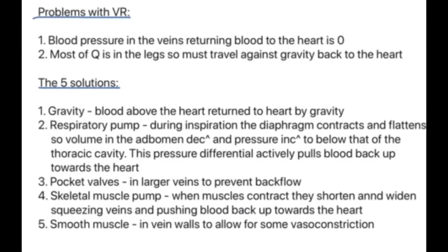After getting those notes down, we're going to briefly look at the problems and solutions with venous return. In an exam, these questions will be short — four marks maximum — asking you to identify two problems with venous return or give three examples of solutions. The two problems are: firstly, the blood pressure in the veins returning blood to the heart is zero. Secondly, most of cardiac output is in the legs, so it has to travel against gravity to get back to the heart.